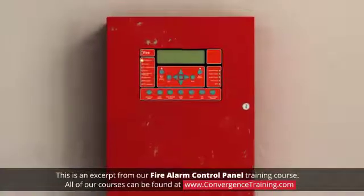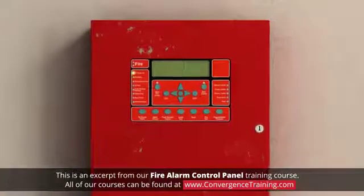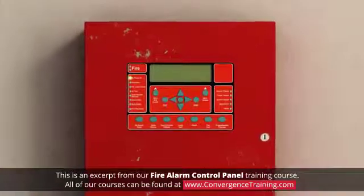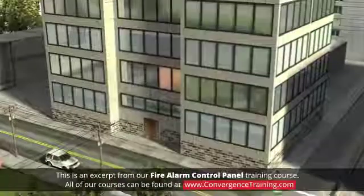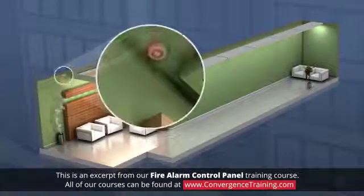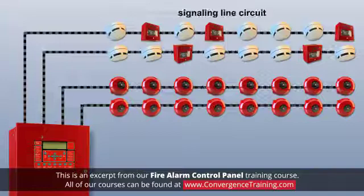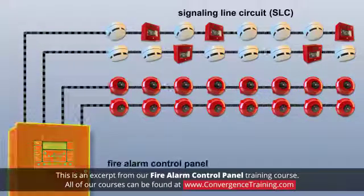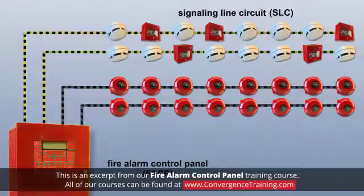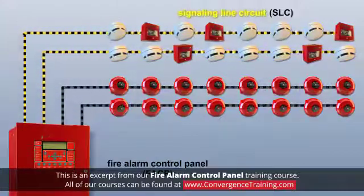Addressable systems use advanced technologies and detection equipment for discrete identification of alarm signals at the detector level. An addressable system can pinpoint an alarm location to the precise physical location and the type of initiating detector. Each component on the signaling line circuits, or SLC, has an identification number or address. The fire alarm control panel, or FACP, constantly checks each device using a signaling line circuit, or SLC.